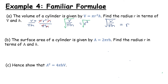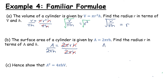Let's look at the next part of this question. They've told us that the surface area is given as a equals 2 pi r h. Find the radius in terms of a and h. Starting with 2 pi r h, we want to get r on its own, so we divide both sides by 2 pi h. The 2's cancel, pi's cancel, and h's cancel, so a over 2 pi h is equal to r. That was quite straightforward.